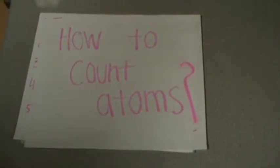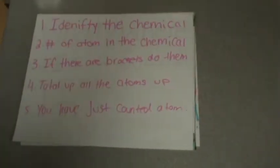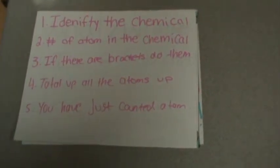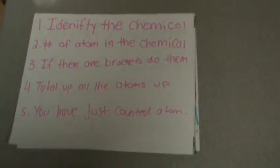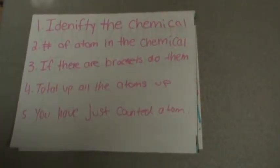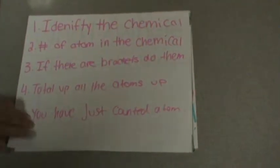How to count atoms? Step 1 would be identify the chemical. Step 2 is identify the number of atoms in the chemical. Step 3 is if there's any brackets to them. Step 4 total up all the atoms. Step 5 you have just counted atoms.